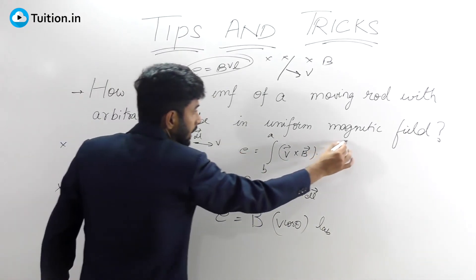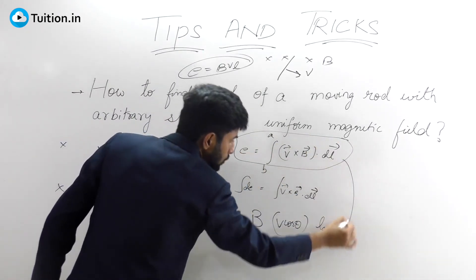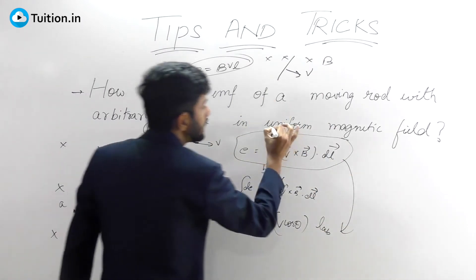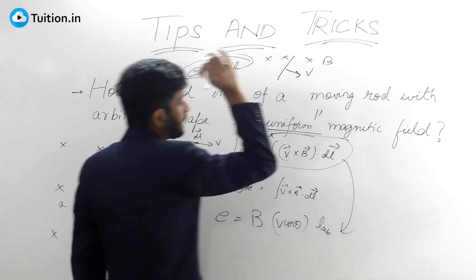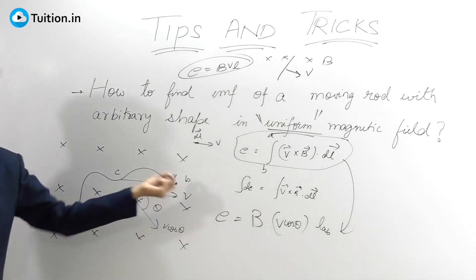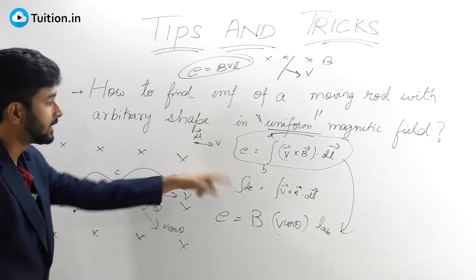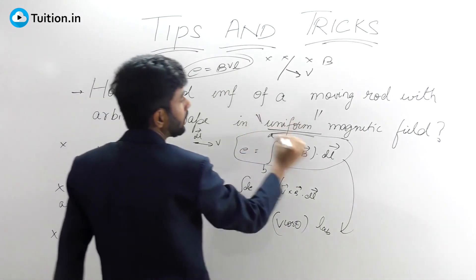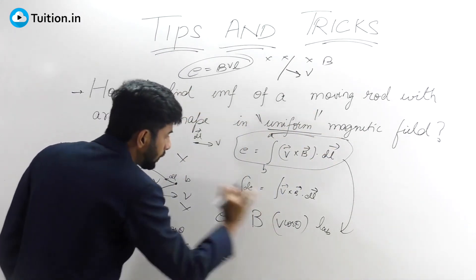Remember, I can do this—this integral can be reduced to this—only if the field is uniform. The word uniform is very crucial. If the magnetic field changes its direction or magnitude at any point, then this expression can't be used. I'm able to use it only because the field is uniform.